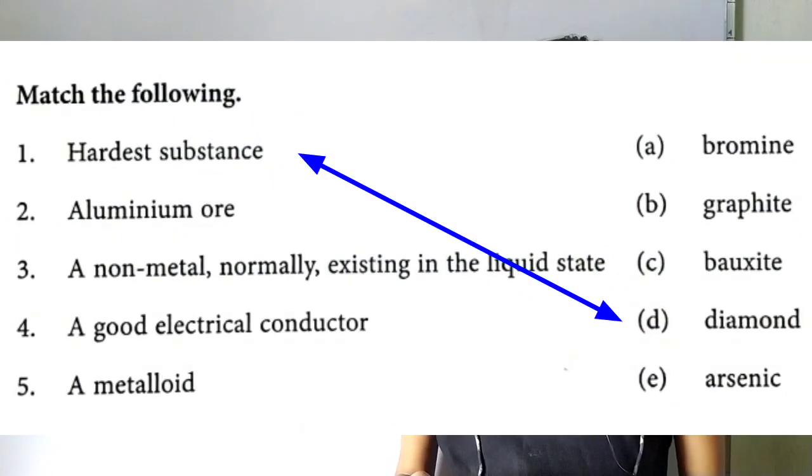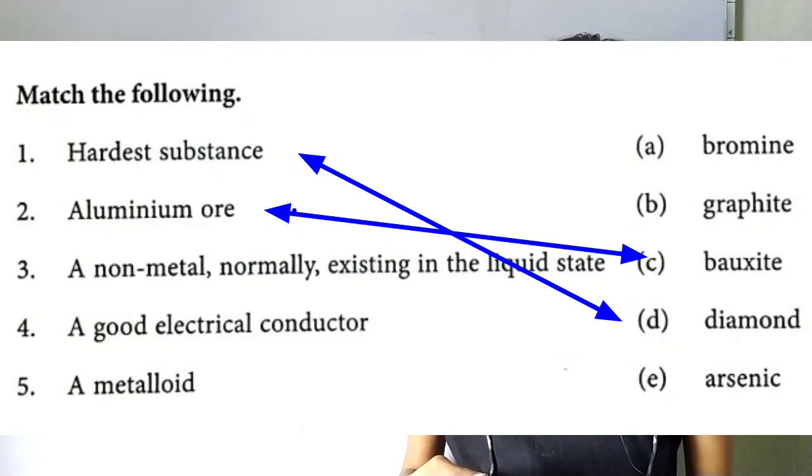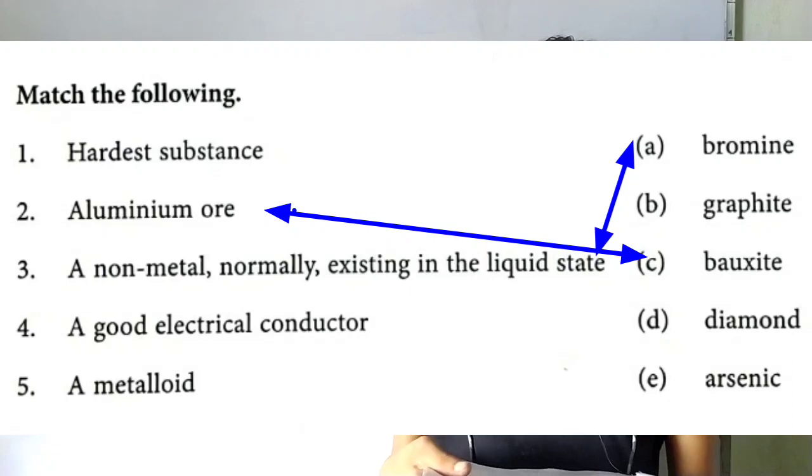First, hardest substance D. Diamond. Second, aluminum ore C. Bauxite. Third, a non-metal normally exists in the liquid state A. Bromine.